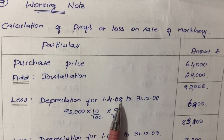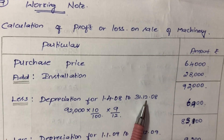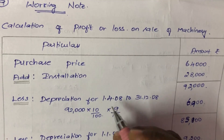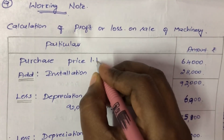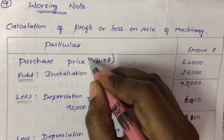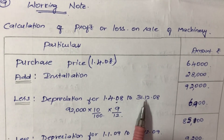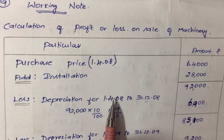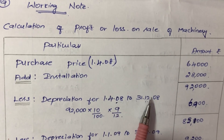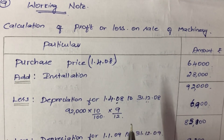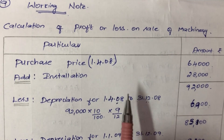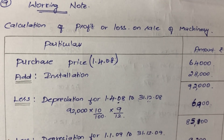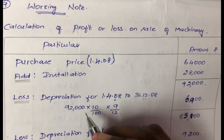Less depreciation for 1st April 2008 to 31st December 2008. The closing date is 31st December, and machinery was purchased on April 1st. From April to December, that is 9 months — April, May, June, July, August, September, October, November, December. So we use 9 by 12.